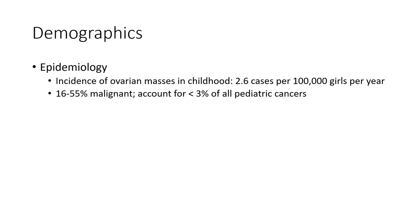Epidemiology: the incidence of ovarian mass in children is 2.6 cases per 100,000 girls per year. 16% to 55% are malignant, accounting for less than 30% of all pediatric cases.